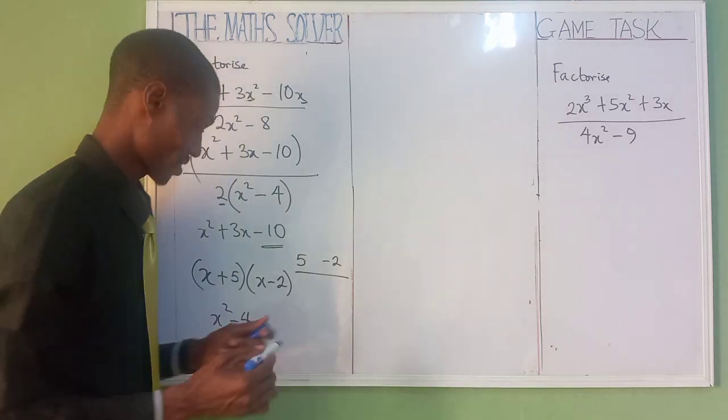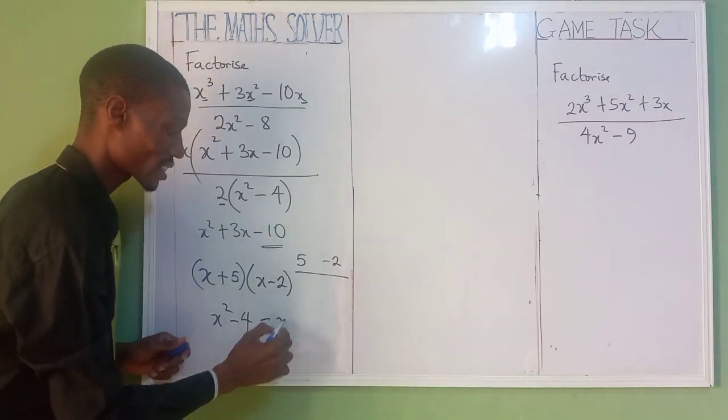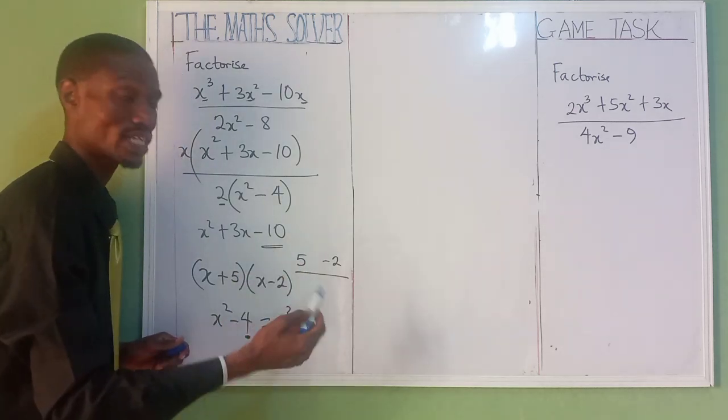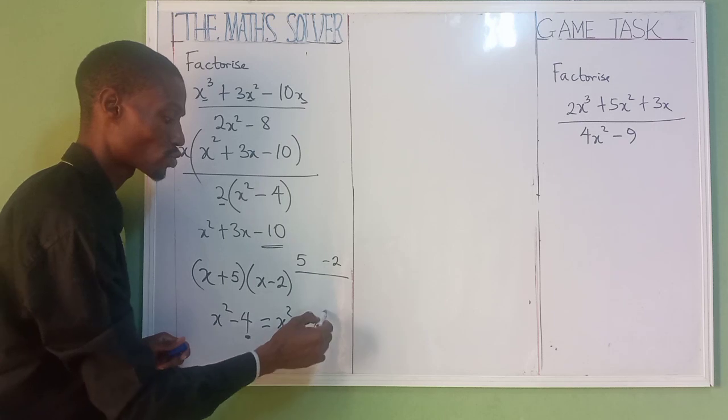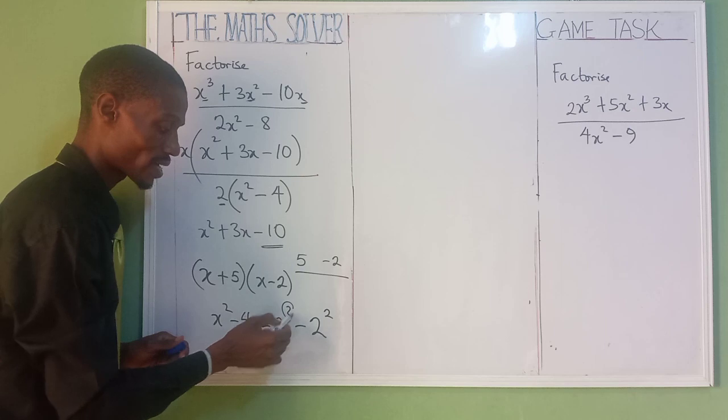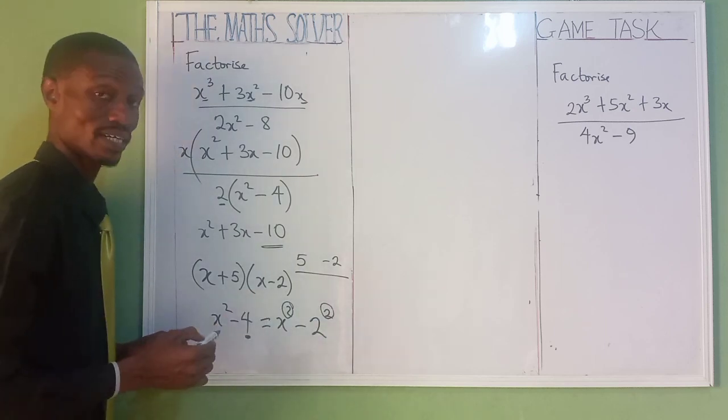This is what we call the difference of two squares. How are we going to solve it? It means x² minus, you take this to a number that has a perfect square that will give you 4, which is 2². 2² gives us 4, so that we can have square and square.